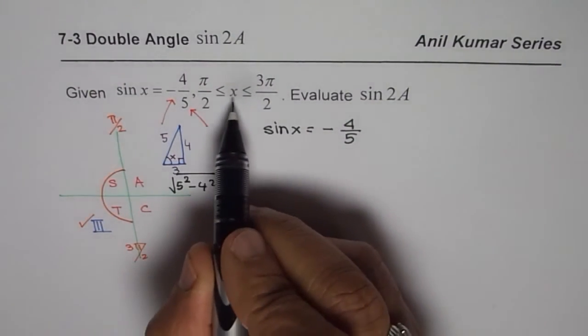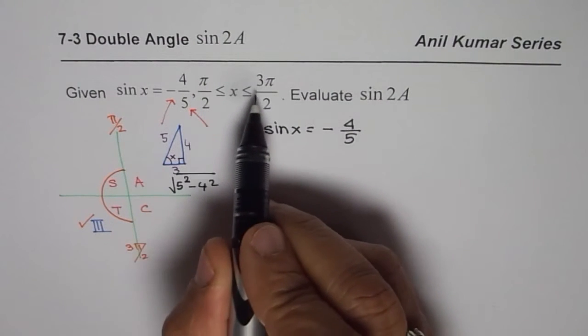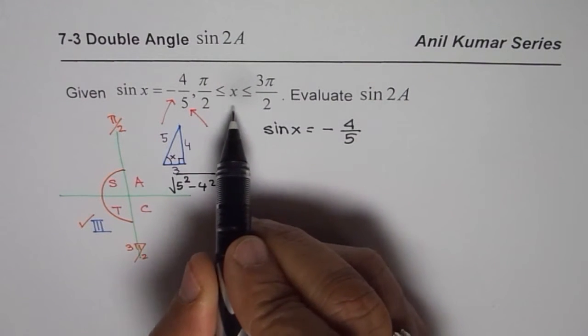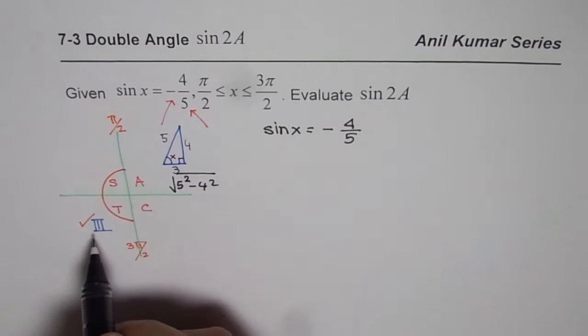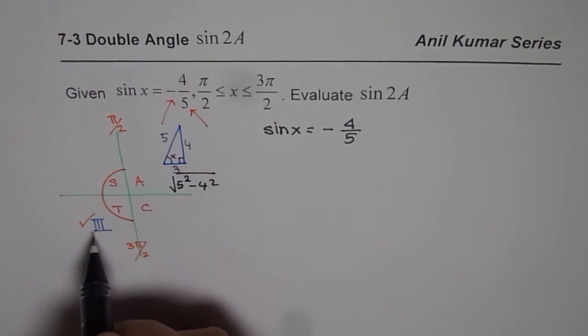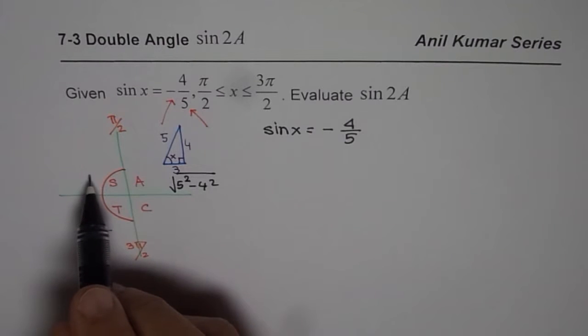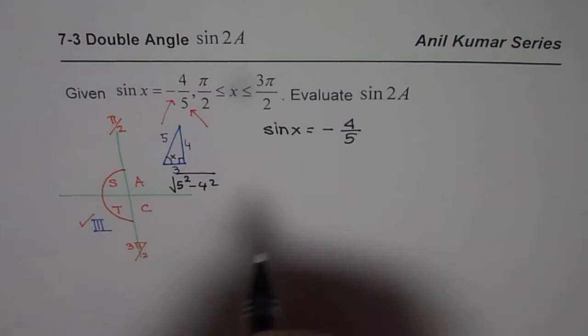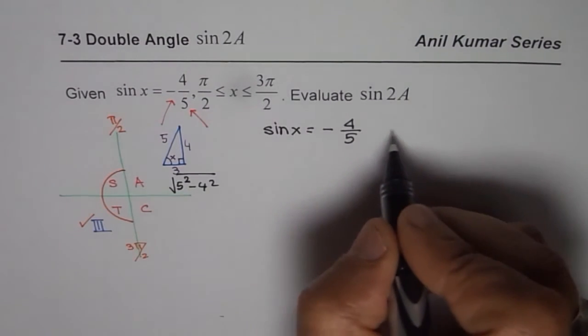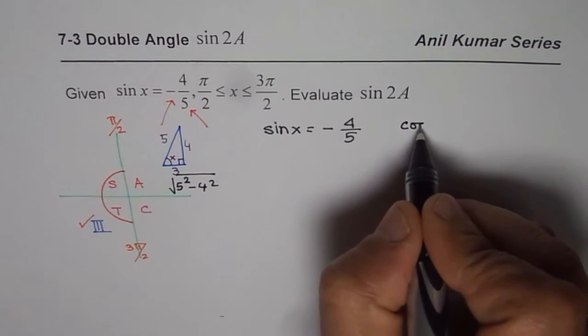Now since x is between π/2 and 3π/2, we are sure that x lies in quadrant 3. Since sine is negative in quadrant 3, and sine is positive in quadrant 2, it cannot lie in quadrant 2. Now if sine x is minus 4 over 5, what is cosine of x?